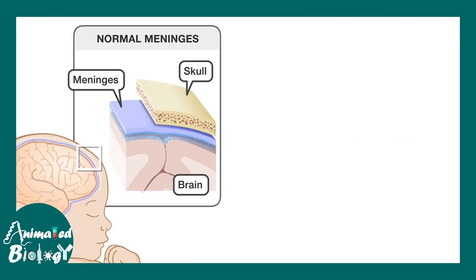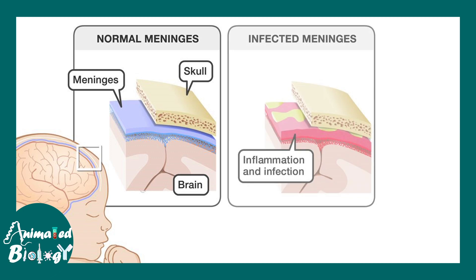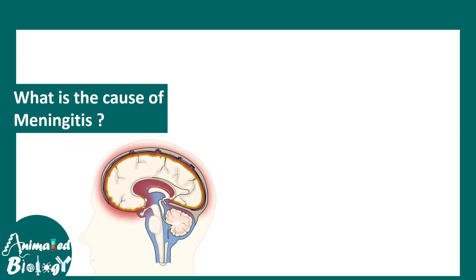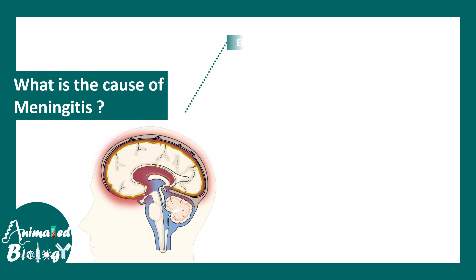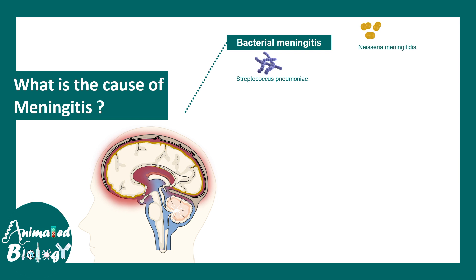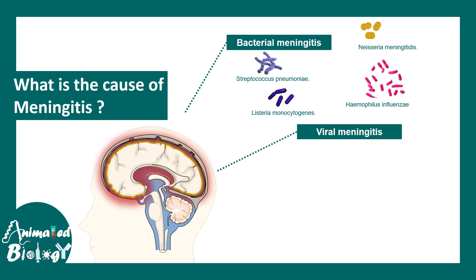Meningitis can be caused due to many reasons. This is how a normal and infected meninges look like. The reason for meningitis could be bacterial — bacteria like Streptococcus pneumoniae, Neisseria meningitidis, Listeria monocytogenes, and Haemophilus influenzae can possibly lead to bacterial meningitis.